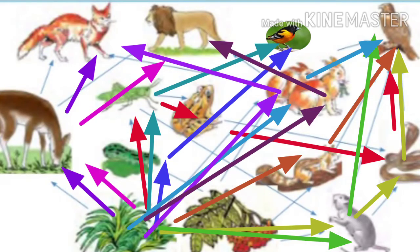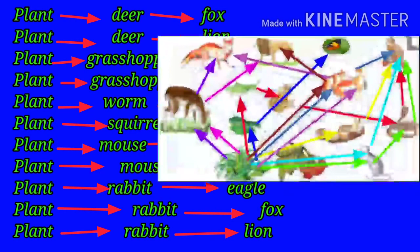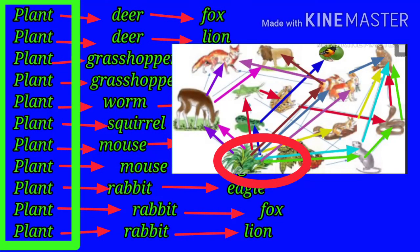In this way, we can see there is formation of a great food web. We can observe that the primary part of all the food chains is plants. It shows that the most important food in food chains is plants.